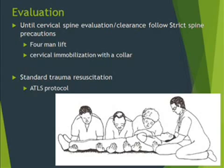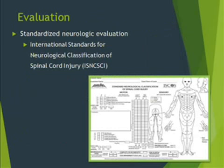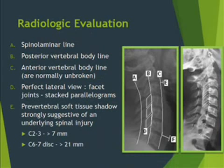Treatment starts right at the site of the accident. Until cervical spine evaluation or clearance is done, one should follow strict spine precautions with proper lifting techniques and proper immobilization. One should initiate standard trauma resuscitation with the ATLS protocol. The history would include details about pain and mechanism of injury, and the examination would include cervical spine curvature and soft tissue asymmetry. Neurological evaluation is generally done using the INSCE classification.